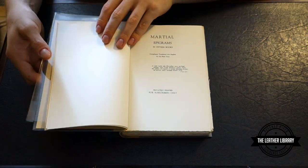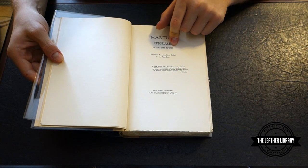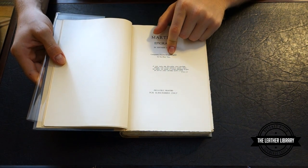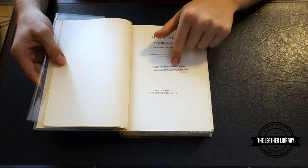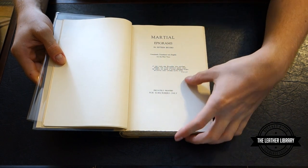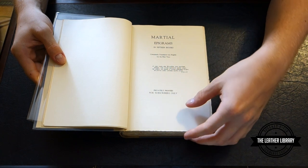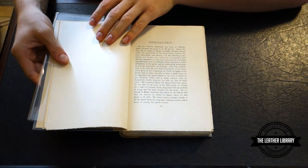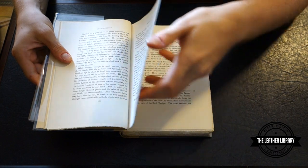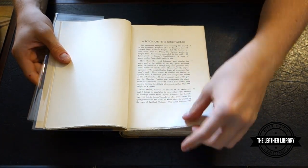As you can see here it says Marshall's Epigrams in 15 books, completely translated into English for the first time. We have one of the original Latin epigrams down here, this is epigram eight there. And then it says, once again, privately printed for subscribers only. And then we have an introduction and so on. So this is an all English edition of the text.